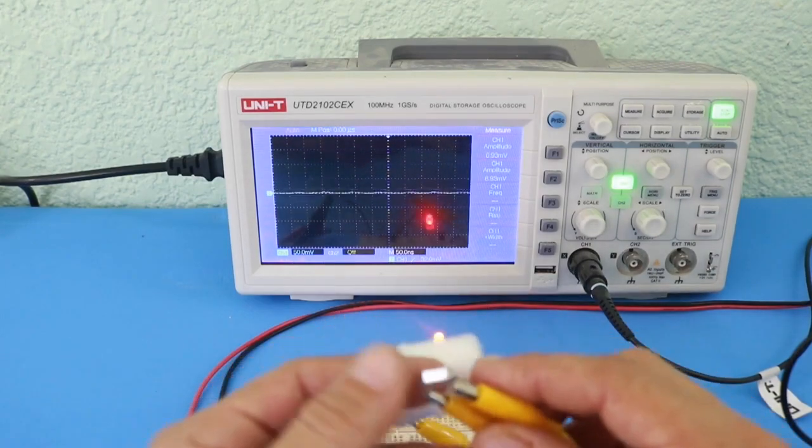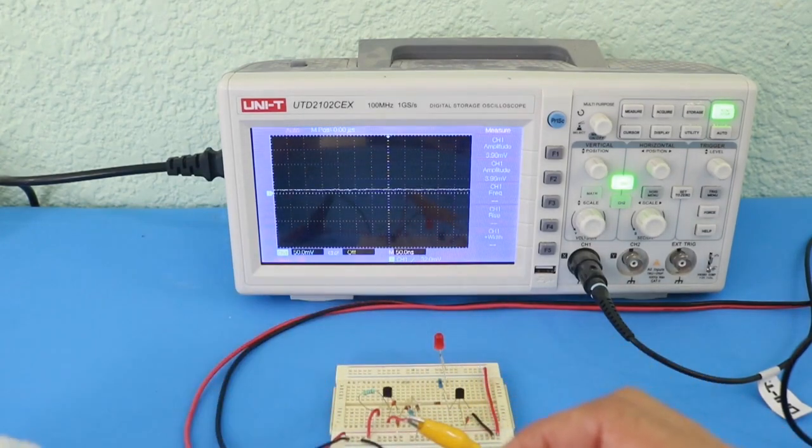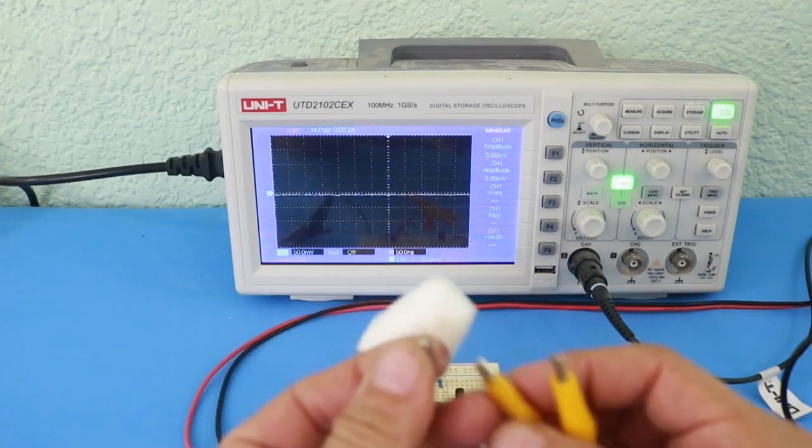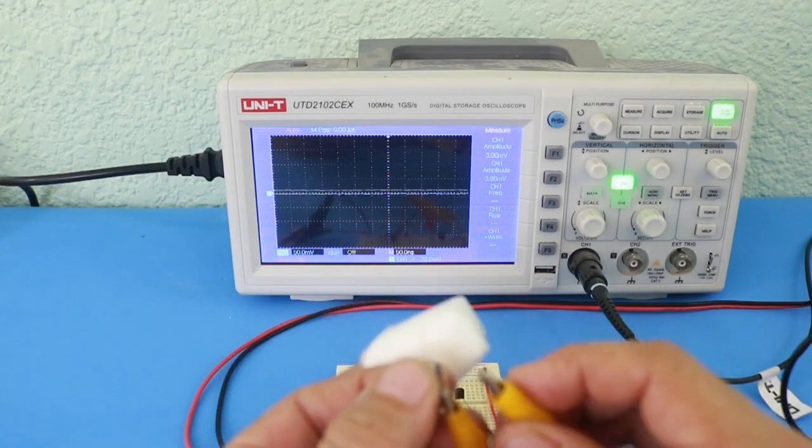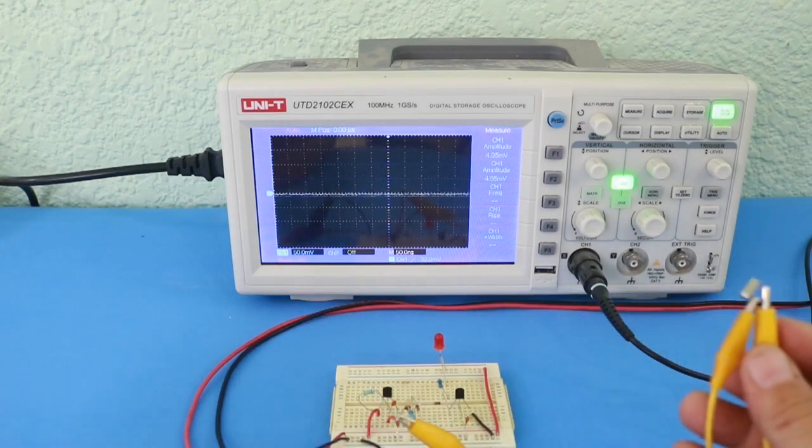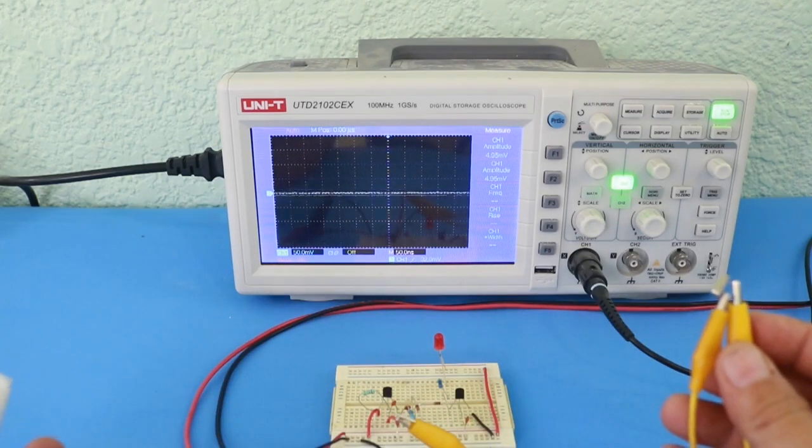If we change the crystal with this other one, which is bad, we can see that the LED remains off.